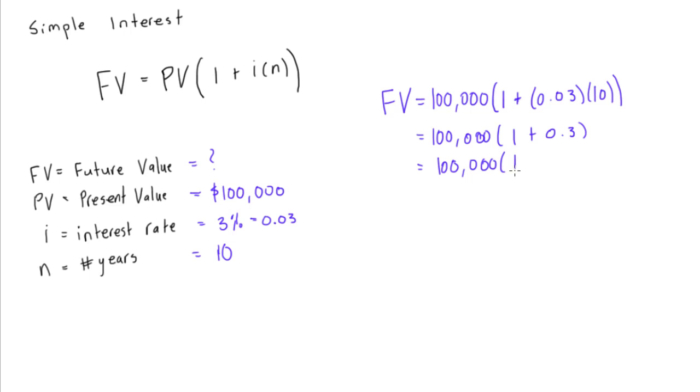So we get $100,000 times 1.3. After 10 years, when you go to withdraw this simple interest loan, you're gonna have $100,000 times 1.3, which is $130,000.